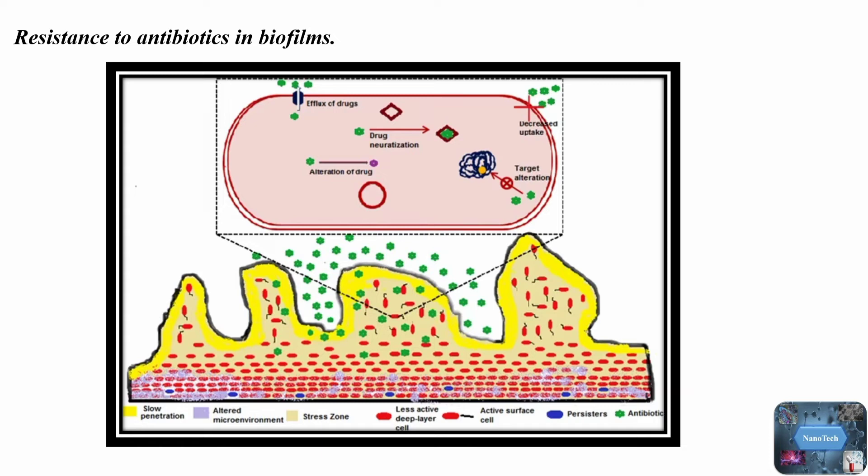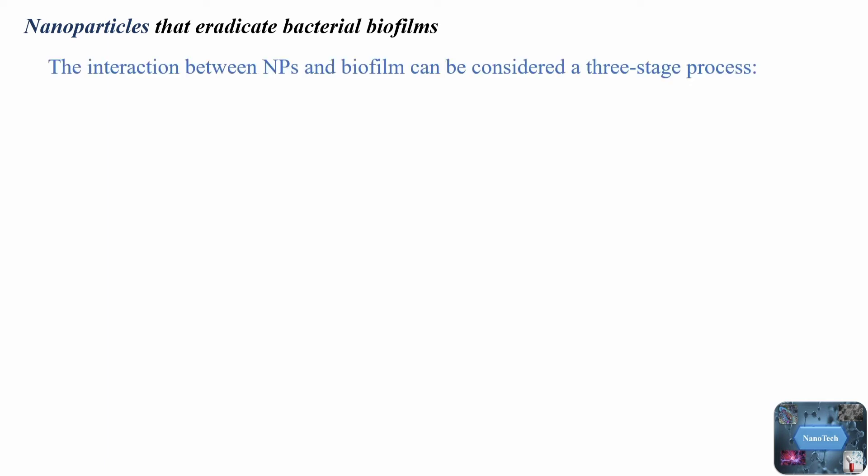Nanoparticles that eradicate bacterial biofilms: nanoparticles are considered a promising tool for the treatment of bacterial biofilms because antimicrobial resistance mechanisms do not work against nanoparticles. Metal and metal oxides that produce reactive oxygen species and other nanomaterials have been tested for antibacterial effects. Metal oxide nanoparticles such as TiO2, Fe3O4, ZnO, copper oxides, and other mixed metal oxides are among the many nanoparticles that have received the greatest attention and promise. Many metal oxide nanoparticles exhibit biological properties much better than the nanoparticles of the parent metals.